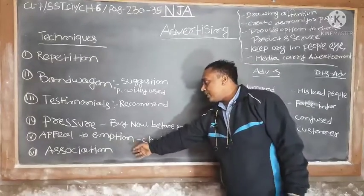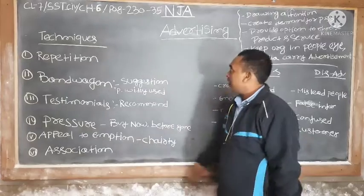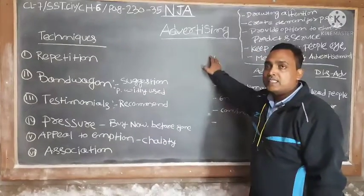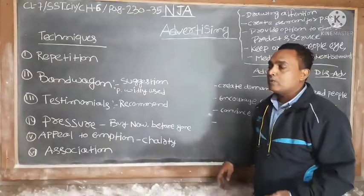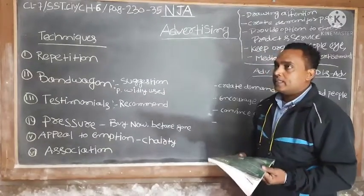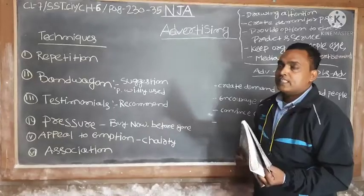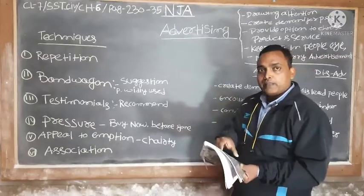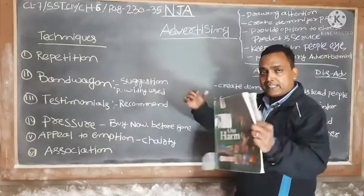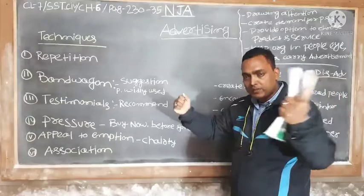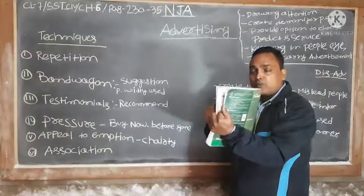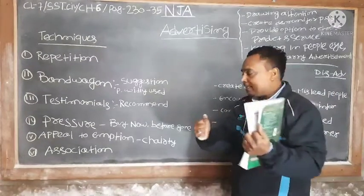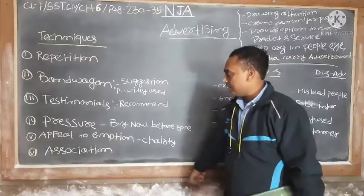The sixth technique is association. Association is one type of technique. Suppose you buy a cologne — you associate it with something else, like going somewhere special. Association means a combination of more than one thing — that is called association.